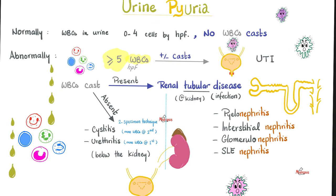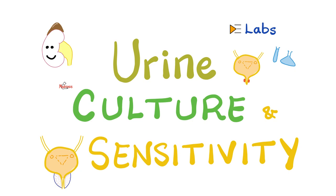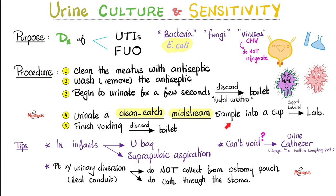Now let's review white blood cell casts. If you see tons of white blood cells in the urine, think urinary tract infection. If you see WBCs with casts, blame the tubule — pyelonephritis, interstitial nephritis, glomerulonephritis, lupus nephritis. If you see lots of WBCs but no casts, it's probably below the kidney: cystitis or urethritis. Please refer to my previous video on pyuria, then proceed to urine culture using a clean-catch midstream urine sample.